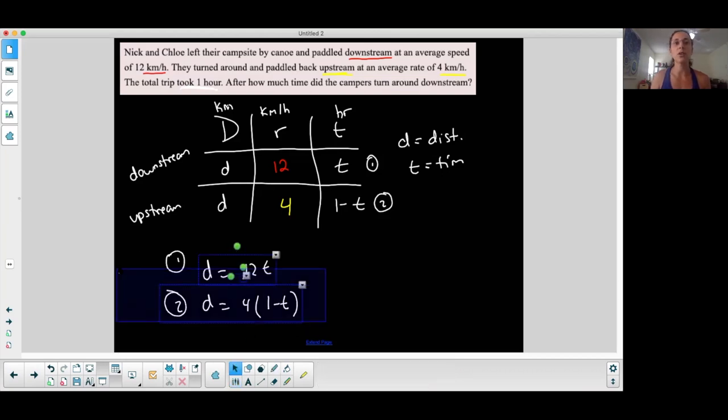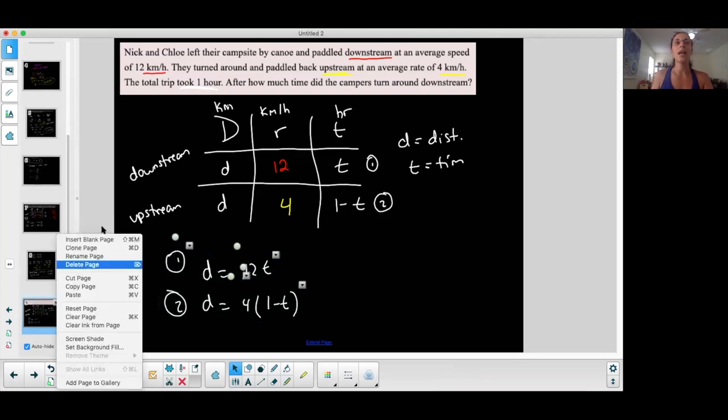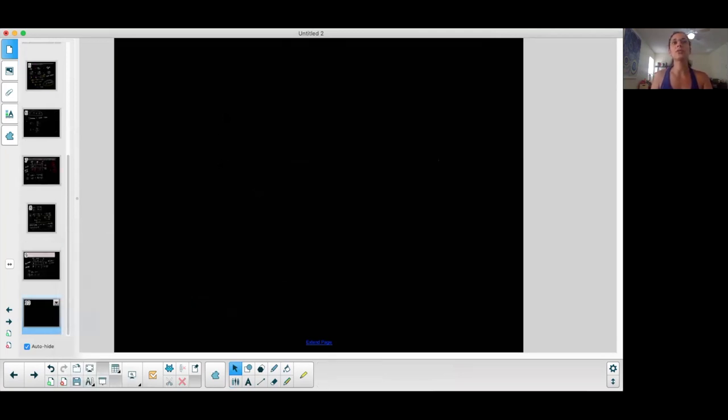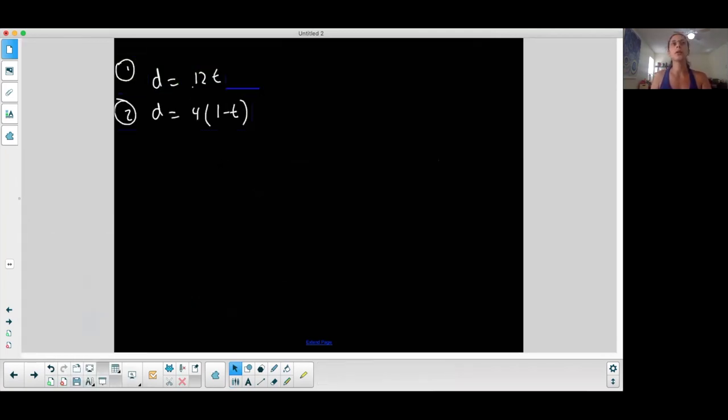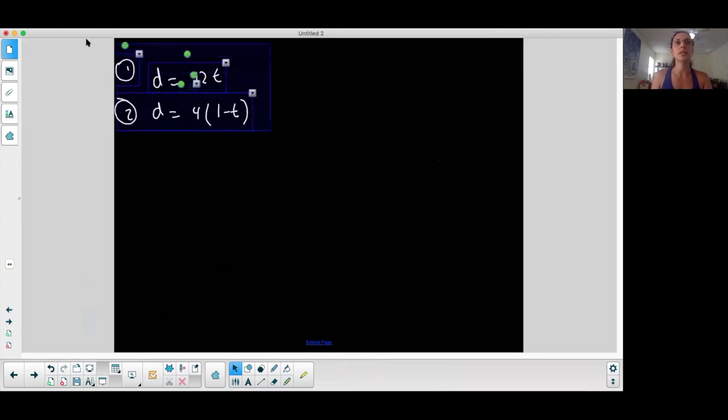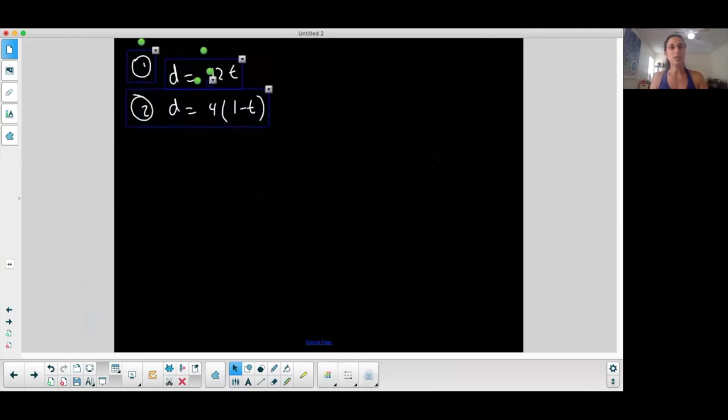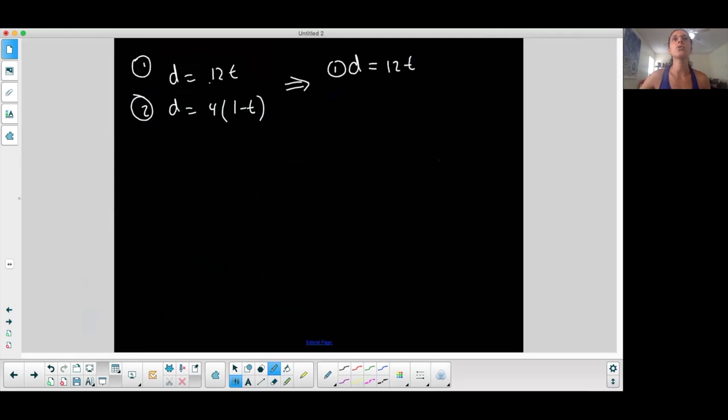And I determined my method based on how my system looks. So looking at this system, I'm thinking I'm probably going to do substitution because it's probably the faster method. Is it the only method? No. Is it the only one that works? No, but I'll show you why I choose substitution. Let me simplify. Equation 1 is not really going to be simplified, but equation 2 is going to be simplified if I distribute the 4, 4 minus 4T.